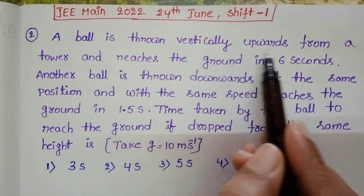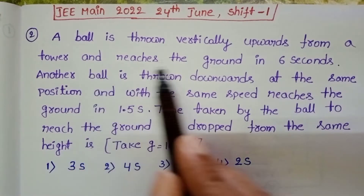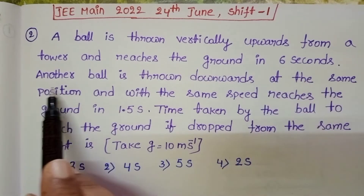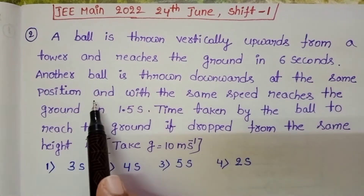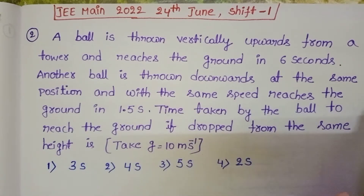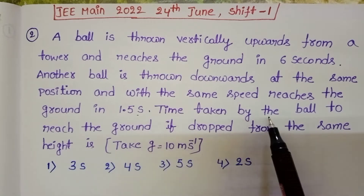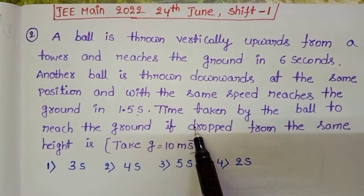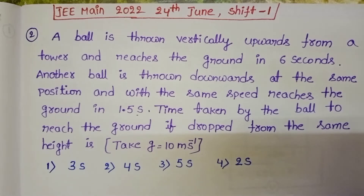A ball is thrown vertically upwards from a tower and reaches the ground in 6 seconds. Another ball is thrown downwards at the same position and with the same speed, reaches the ground in 1.5 seconds. Find the time taken by a ball to reach the ground if dropped from the same height.